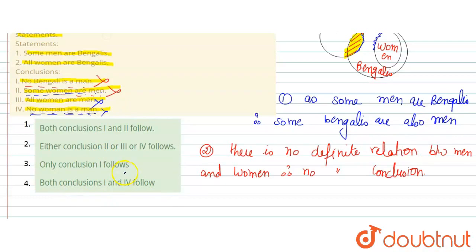So your answer will be none follows. But look, one option is given for either/or. Either conclusion first or third, or fourth follows. Either/or will apply to first or third, second or third.